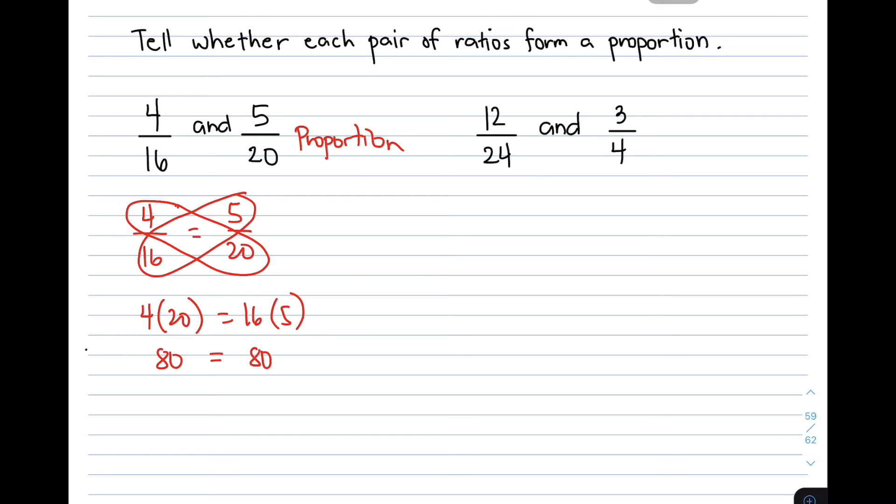So let's move on with the next example. We have 12 over 24 and 3 over 4. How are we gonna show that these two ratios can form a proportion? So we have here 12 over 24 is equal to 3 over 4. We can multiply these two numbers, your extremes, 12 times 4, it will give you 48. And you can also multiply your means, 24 times 3, it will give you 72. As you can see, they are not equal or they are unequal. So this one is not a proportion.